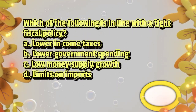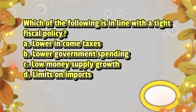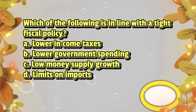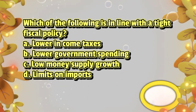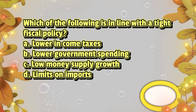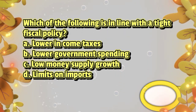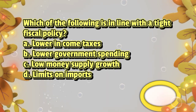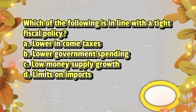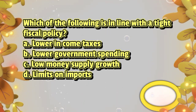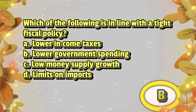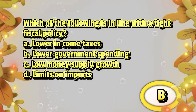Which of the following is in line with a tight fiscal policy? A. Lower income taxes, B. Lower government spending, C. Low money supply growth, D. Limits on imports. The answer is letter B.